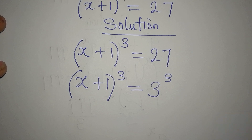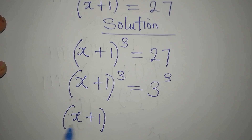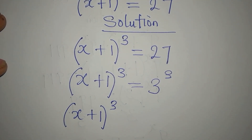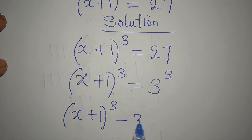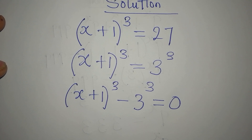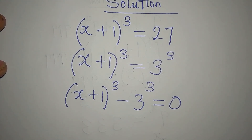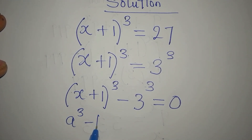Do not equate the bases just because the powers are the same — if you do that, you get only one solution, but we are looking for 3. Instead, take (x + 1)³ to the left and subtract 3³, so everything equals 0. We now have a difference of two cubes.